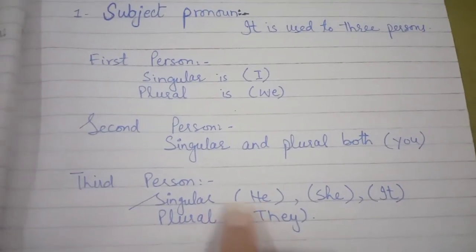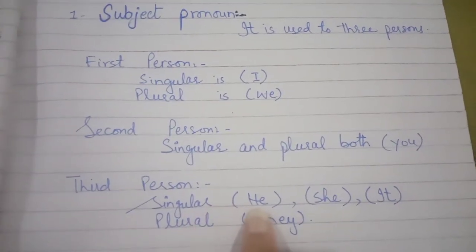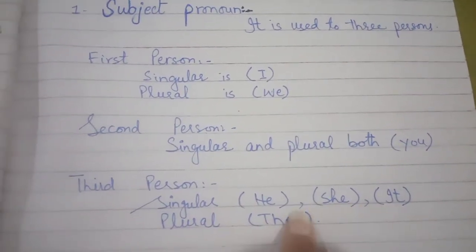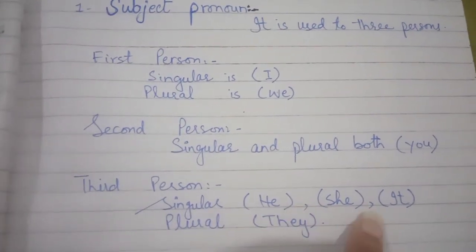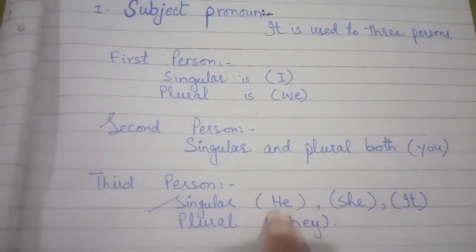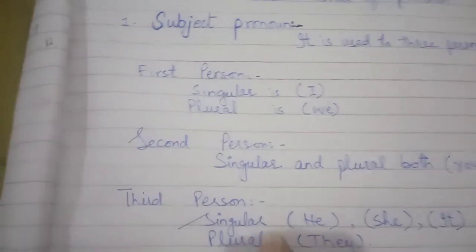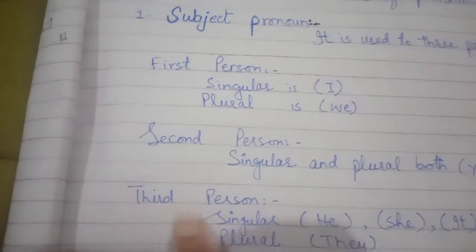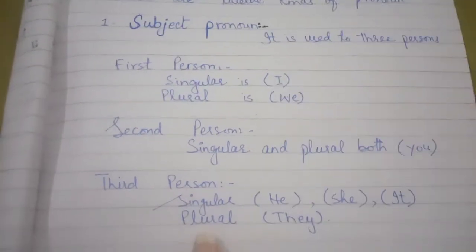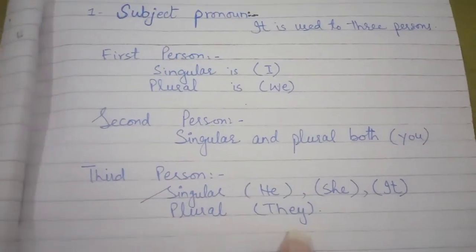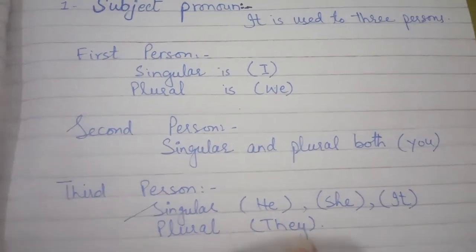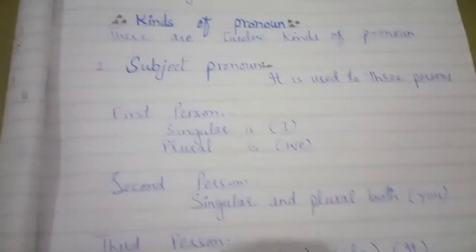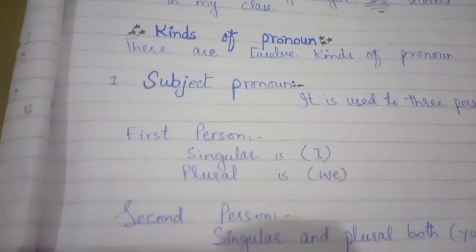The third person in singular condition: we can use 'he', 'she', 'it' in a sentence, and these three pronouns can be identified as third person pronouns. In plural form we can add the word 'they' as a subject pronoun. So this was my video about pronoun.